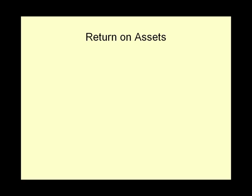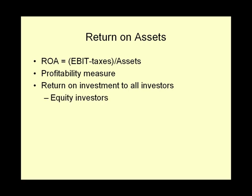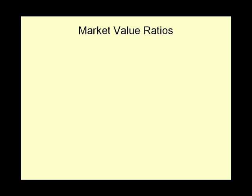Return on assets, composed of two DuPont analysis component ratios, is defined as earnings before interest and taxes minus taxes divided by assets. It's classified as a profitability measure and indicates the return on investment available to all investors — both equity and debt investors. The ratios described so far are typically calculated from information on the financial statements and are therefore book value ratios. Firms and investors also need information reflecting market value.